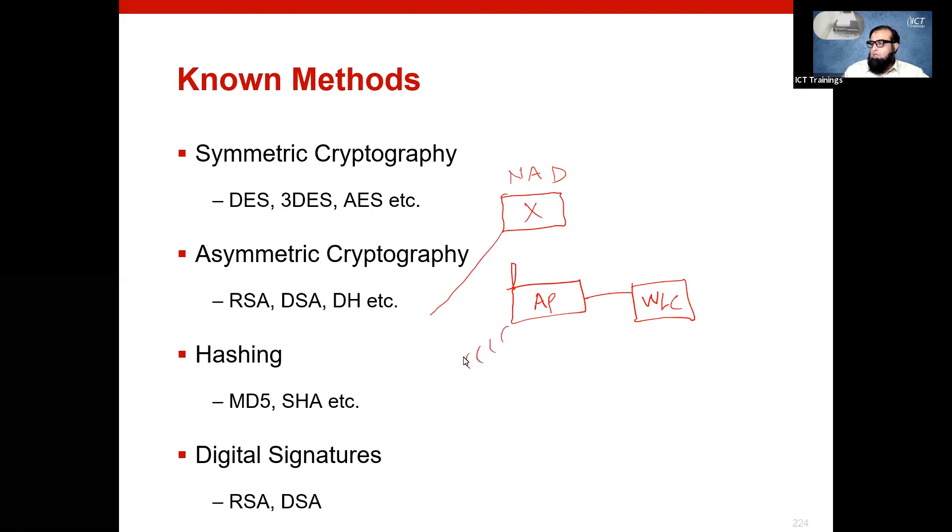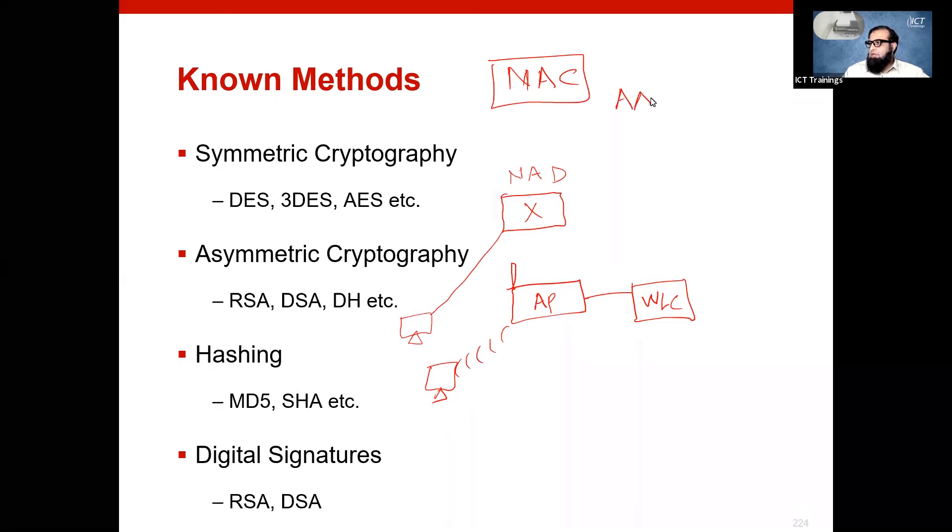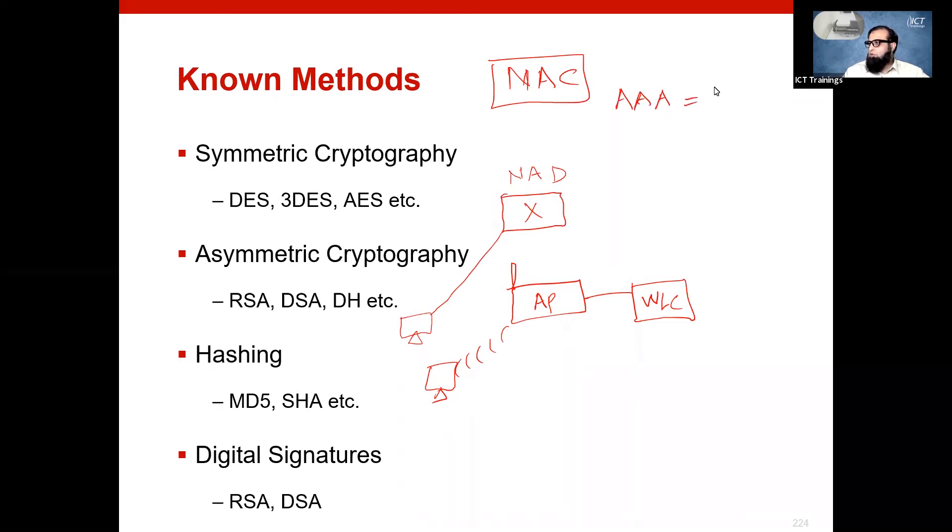In both cases, we are going to authenticate, authorize or account. This is basically Network Admission Control. Now we are going to implement these AAA that is going to be on the data plane.